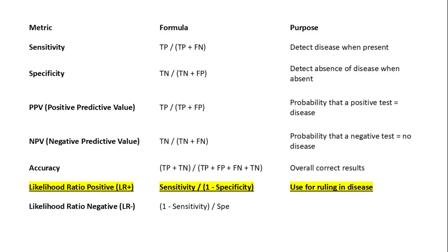Positive predictive value, or PPV, is the probability that a positive test result actually indicates disease. It is calculated as true positives divided by the sum of true positives and false positives.